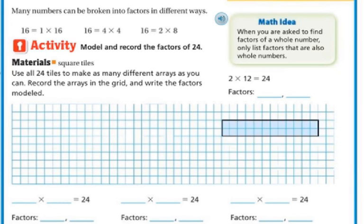Our activity is to model and record the factors of 24. Use all 24 tiles to make as many different arrays as you can, record the arrays in the grid, and then write down the factors that are modeled.